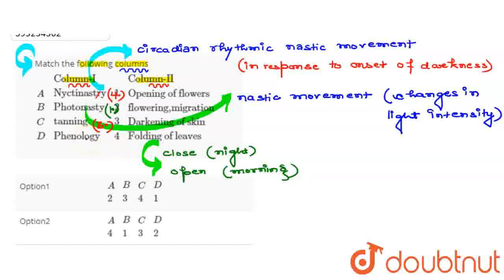Last यहाँ दिया गया है phenology. Phenology यह हमारी study होती है periodic events की. इसमें हम study करते हैं periodic events को in the biological life sciences. On that basis, हम इसे यहाँ पे match करेंगे with the flowering and the migration.